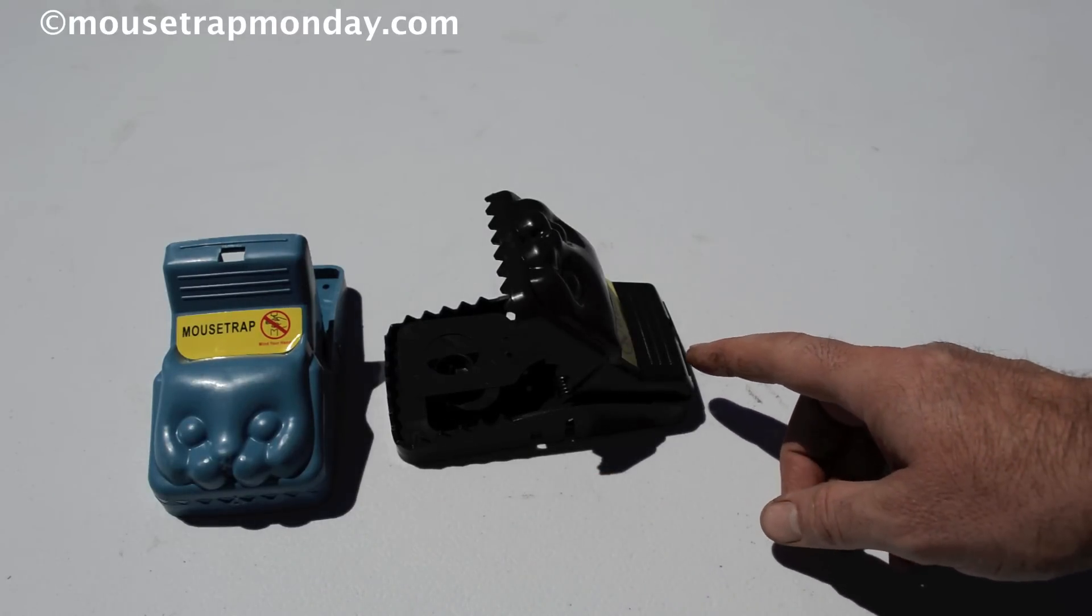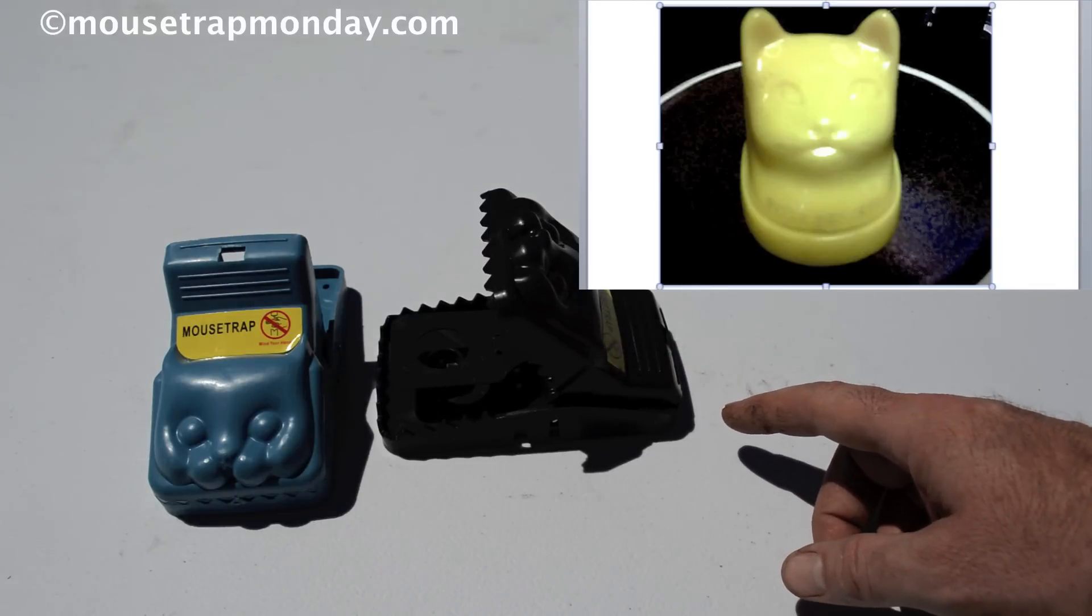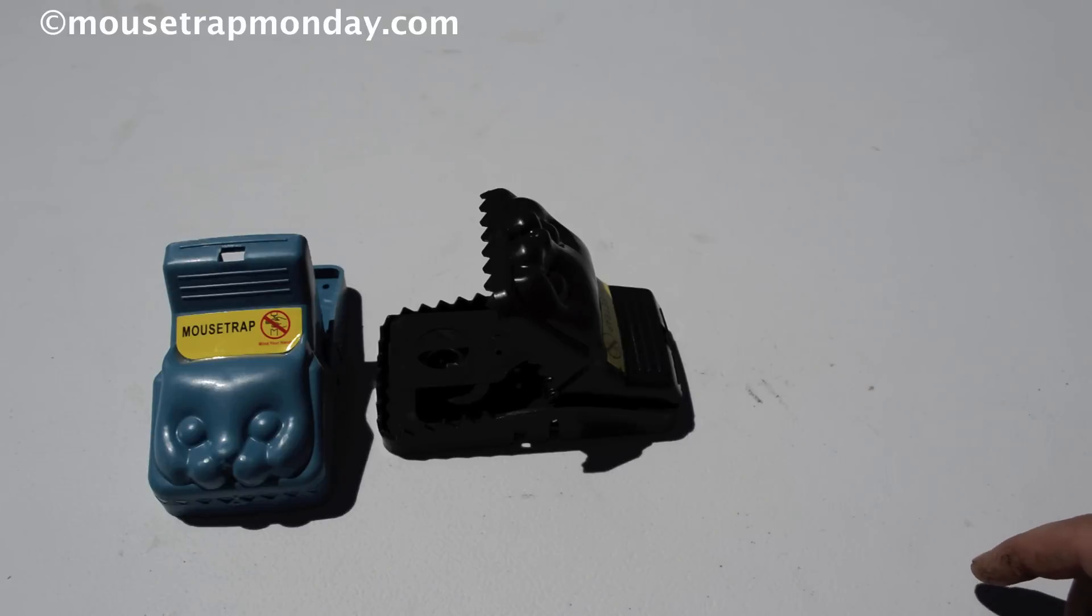Now this definitely isn't the first trap that's been made in the shape of a cat. There was a vintage trap called Kitty Gotcha in the 1950s and that was a popular novelty trap. It's a collector's item now, sells for around $200 a piece, and I'll show you that trap in the next few weeks. I just purchased one.